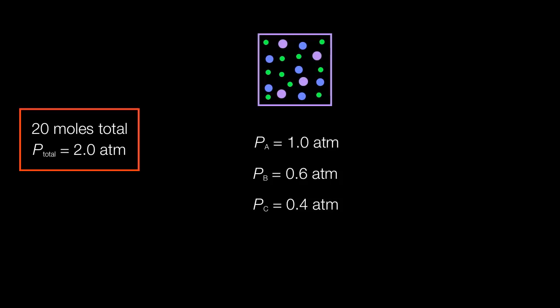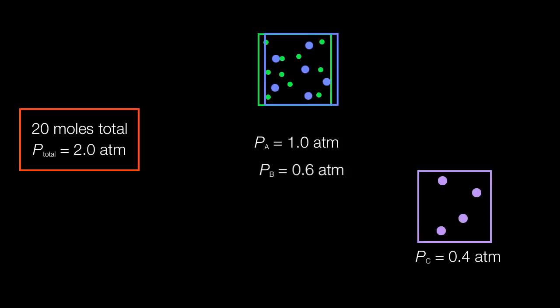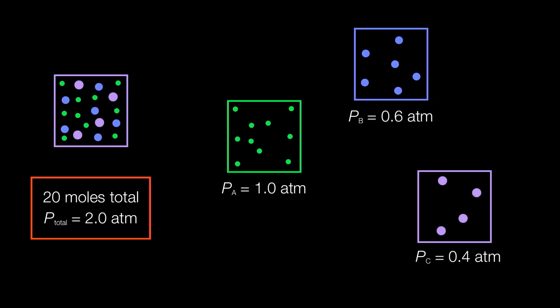So to summarize, we've got 20 moles total. We've got 2 atmospheres of pressure. Now you need to remember the Ideal Gas Law does not care what kind of gases you have. So 20 moles gives you 2.0 atmospheres. Now I'm splitting things back out on the right to show you the separate containers. And I'm also showing you the mixture. I'm going to put a dividing line here to show you that there's two different ways we think.